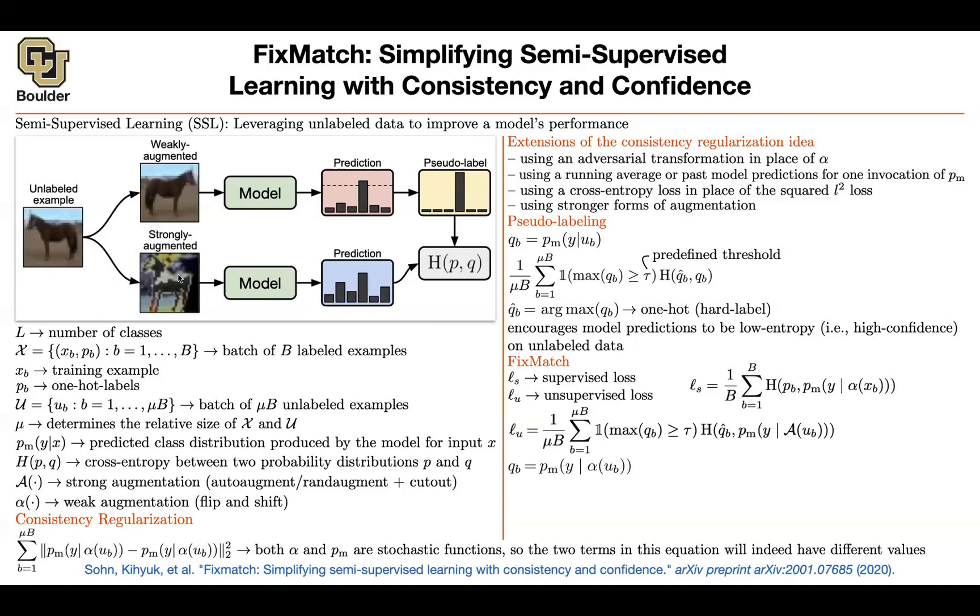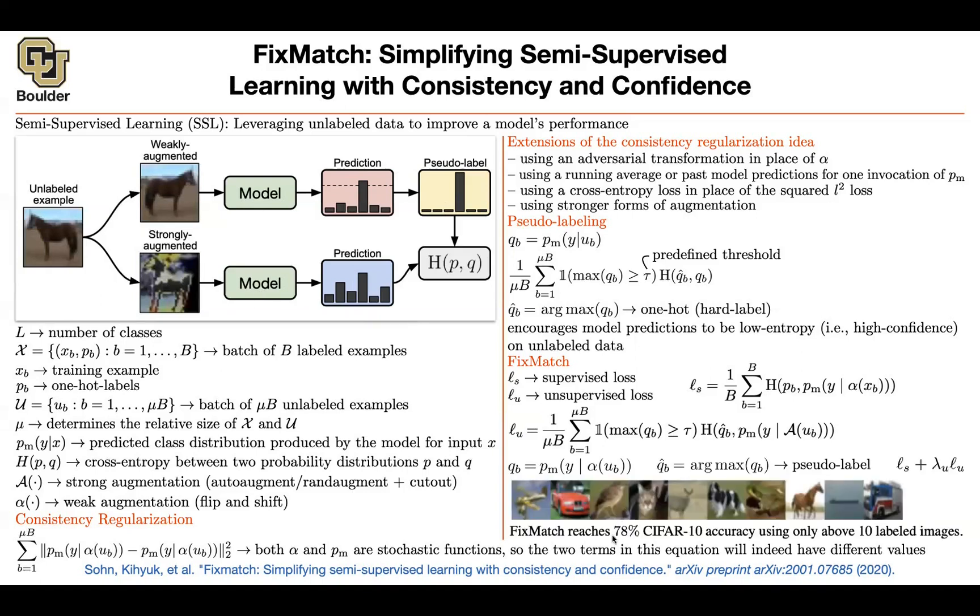Let's see some results on CIFAR-10. This is really impressive. CIFAR-10 has 10 classes. Per each class, you're going to include only one image, so in total you have 10 labeled images, one per each class. The rest of them are unlabeled, and then FixMatch is reaching 78% accuracy.